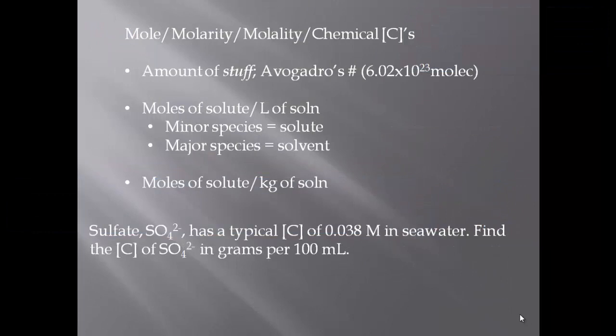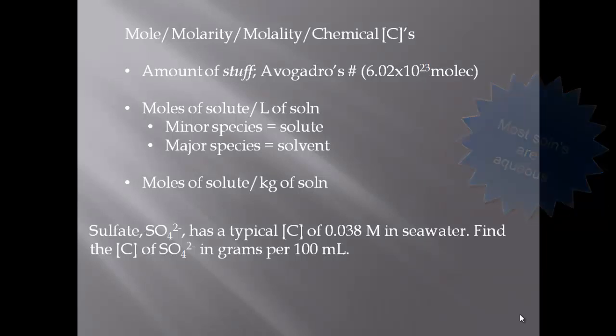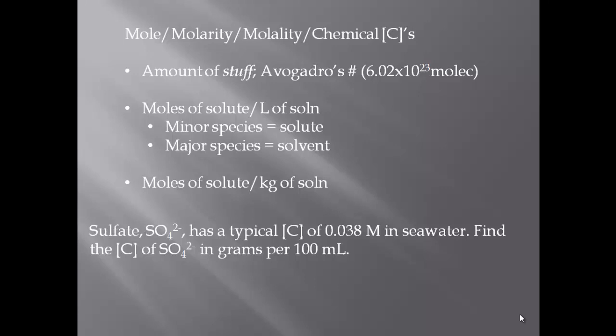The next topic is chemical concentration. As a review: the minor species in a solution is called the solute and the major one is the solvent. In this class and this text, most discussions concern aqueous solutions, so the solvent is water unless stated otherwise. Concentration refers to how much solute is contained in a given volume or mass. Avogadro's number is 6.02 × 10²³ — molecules, chairs, acorns, it doesn't matter — 6.02 × 10²³ of anything equals one mole.